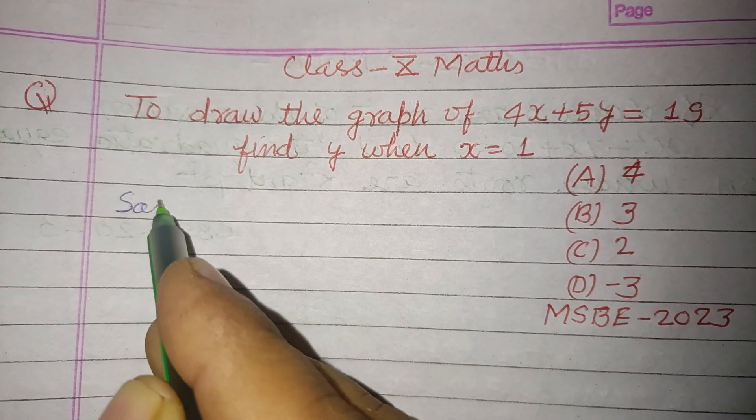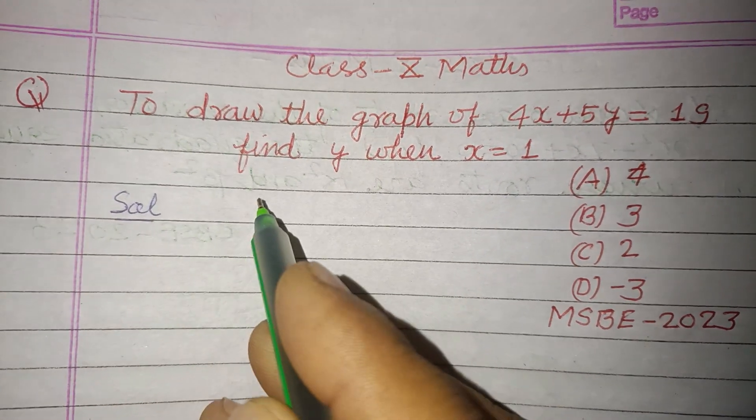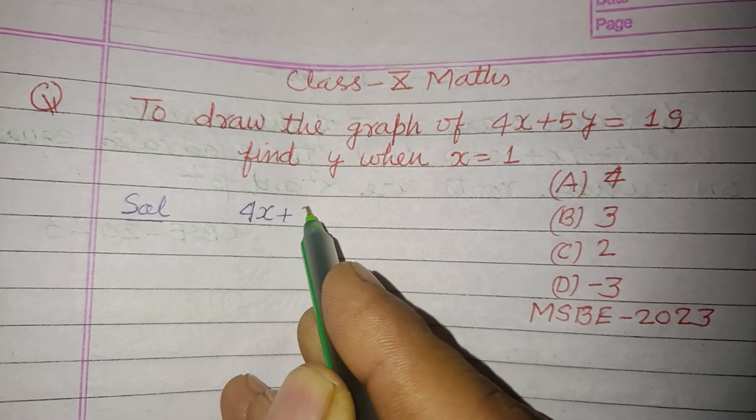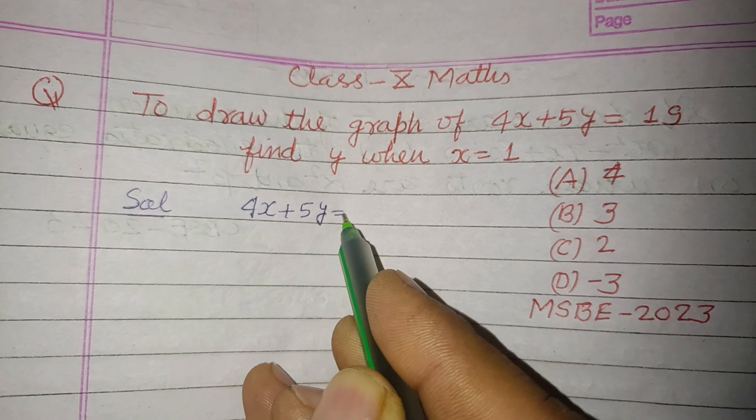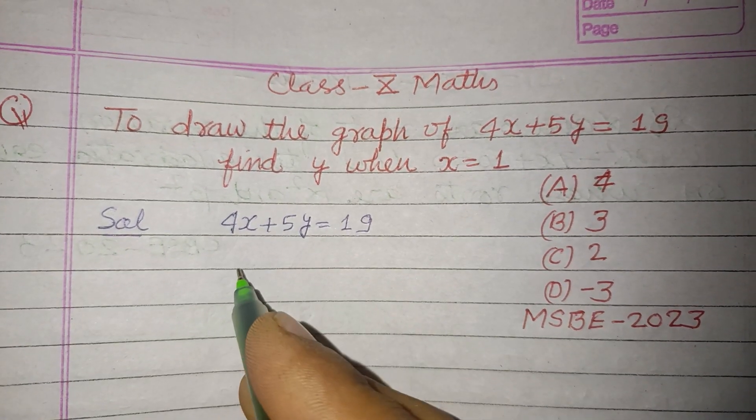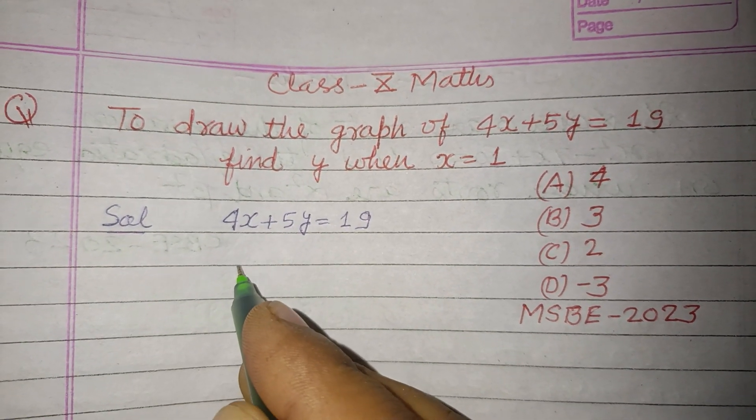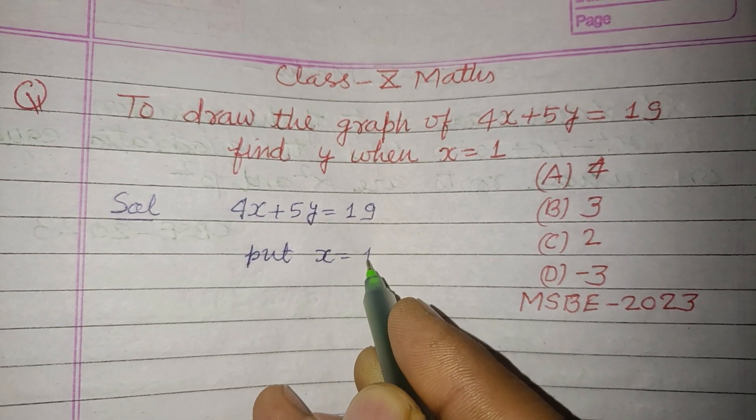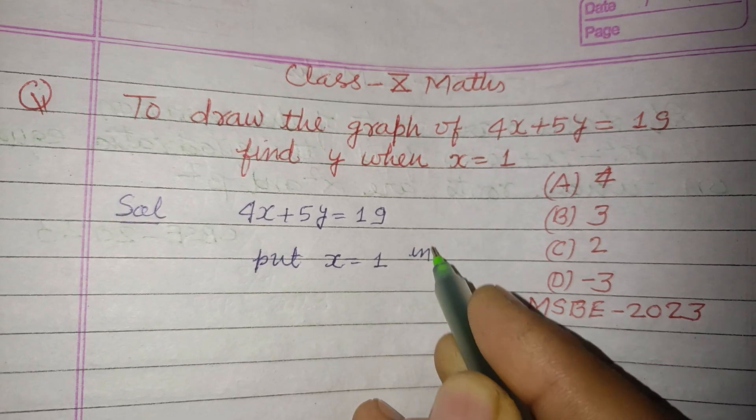So students, this question is based on linear equation which is given here: 4x plus 5y equal to 19. So put x equal to 1 in the equation.